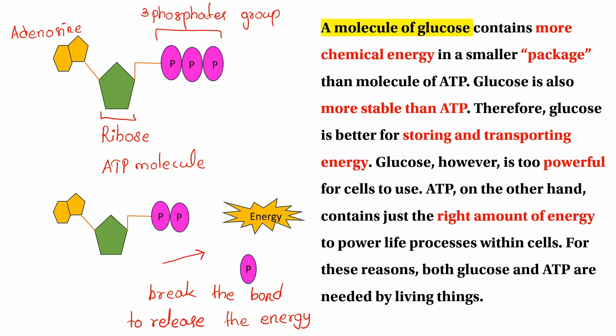Both glucose and ATP are needed by living things. The glucose molecule and ATP molecule work together like a machine — energy from the glucose molecule can be used to add glucose to ATP.